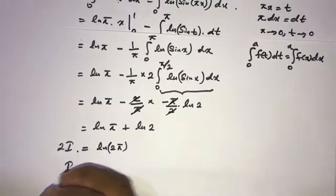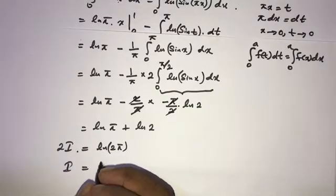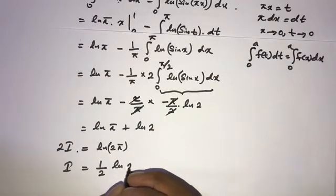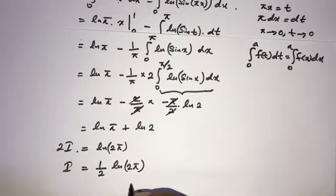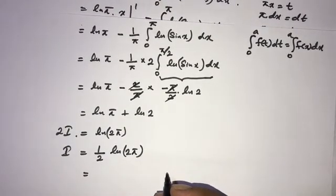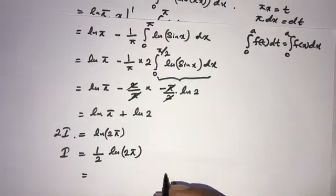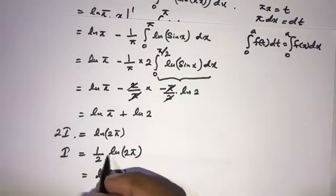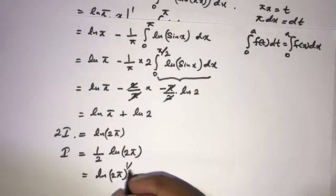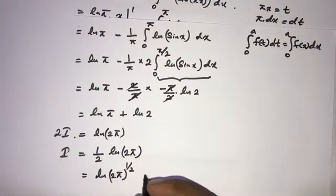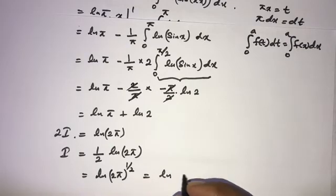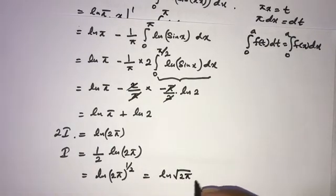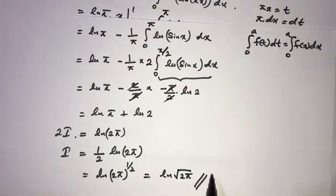Therefore I equals one half of natural log of 2 pi. Using the power property of natural log, we can write this as natural log of (2 pi) to the power of one half, which equals natural log of the square root of 2 pi. So the answer is ln(sqrt(2 pi)).